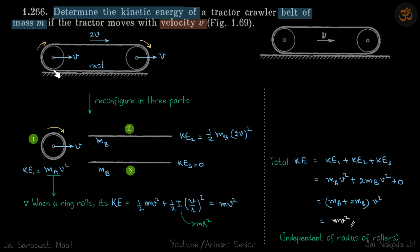If you have any doubt, this part is at rest because it is rolling. If this is zero, this is v, then this is 2v. So we have reconfigured this whole belt into three parts, and now...